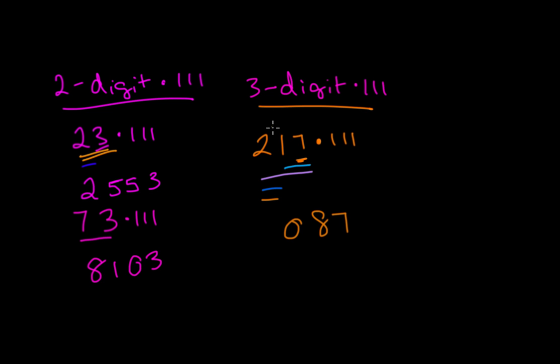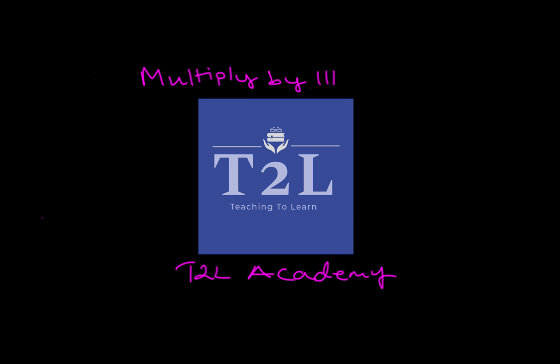So that would just be 7, and then 1 plus 7 or 8, then 8 plus 2 or 10. And with this one you have a carryover, so you would carry over the 1 when you're adding 2 plus 1. So 2 plus 1 equals 3, and 3 plus that carryover is 4, and then 2. And this would be your answer.